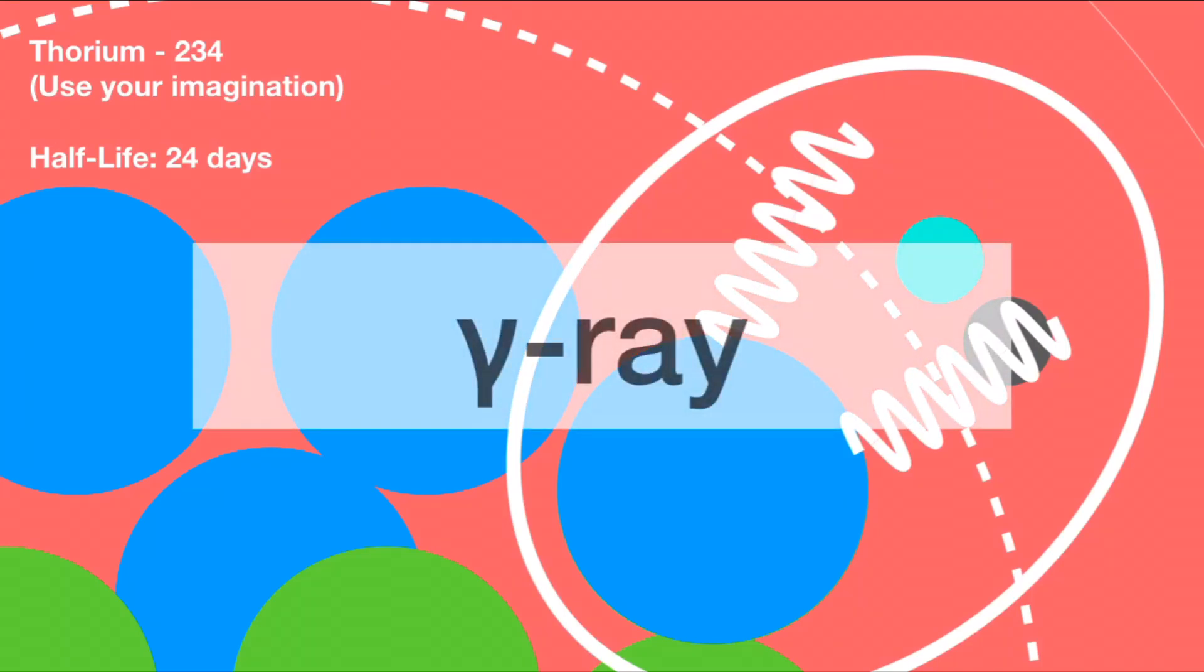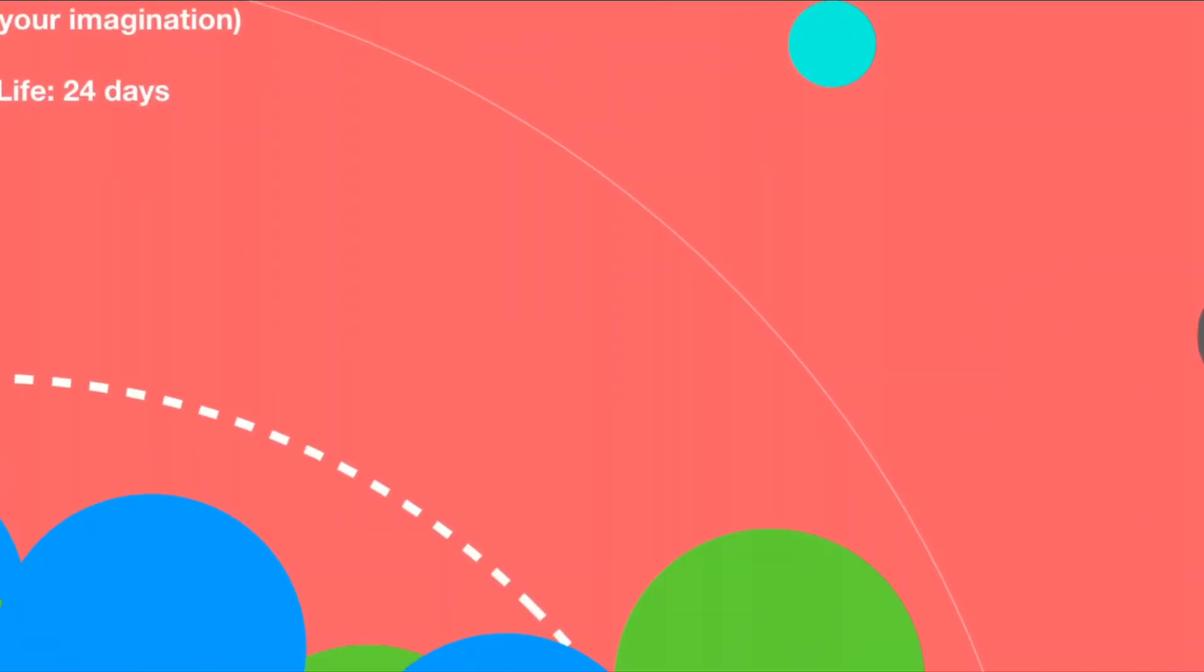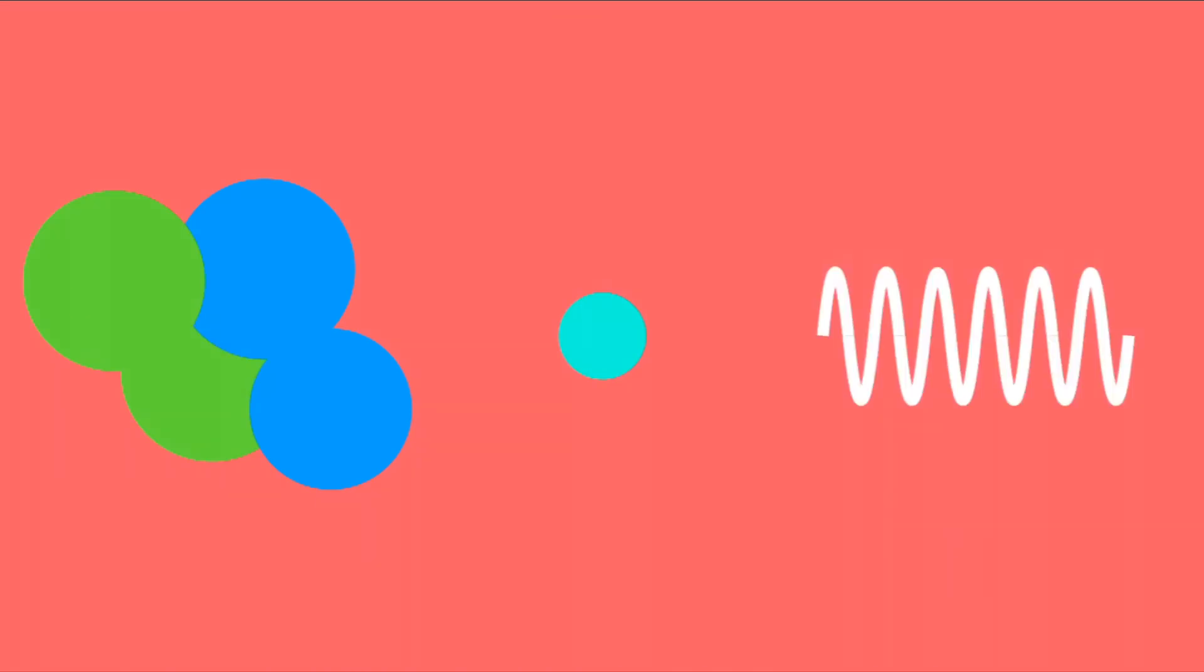They are high-energy electromagnetic waves. Basically, they're gamma rays. If you know about the EM spectrum, you know that that's the highest frequency form of electromagnetic radiation. So, those are the three types of decay: alpha, beta, and gamma.